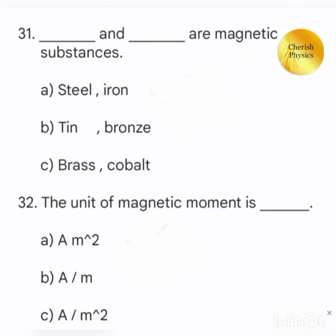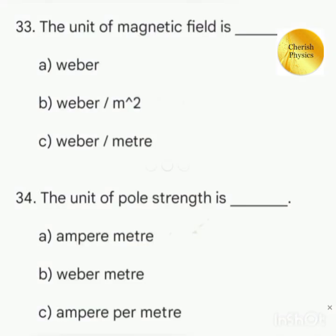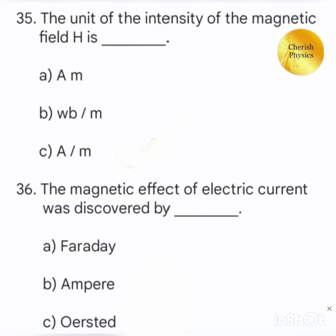Dash and dash are magnetic substances. The unit of magnetic moment is. The unit of magnetic field is. The unit of pole strength is. The unit of intensity of magnetic field is.